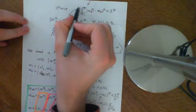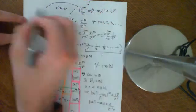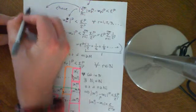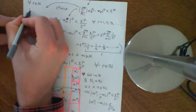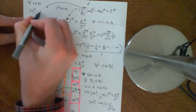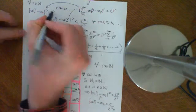But there's a simpler way of doing this, which is to say that if this is going to be true, then it implies instantly that for all r as an element of the natural numbers, the modulus of |x_mr - x_r|^p has to be strictly less than epsilon over p.